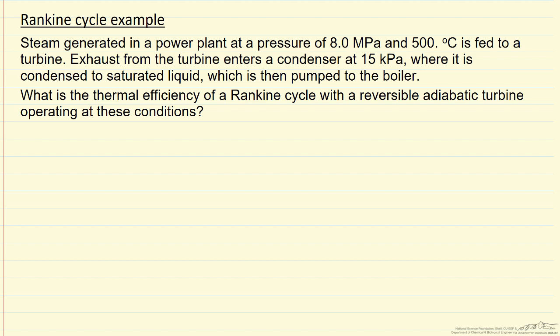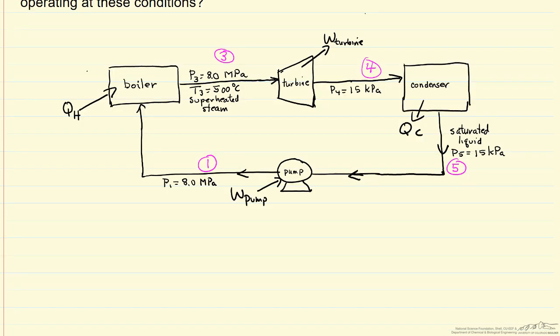So the first thing we're going to do is draw a diagram and label what we know. In the diagram, I've labeled the information that we're given, such as the pressure and temperature leaving the boiler, the pressure leaving the turbine, and the fact that leaving the condenser we have a saturated liquid, and we're assuming constant pressure through the condenser.